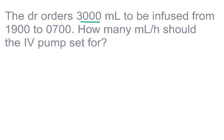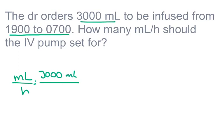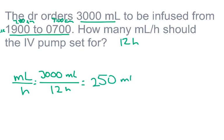Next: the doctor orders 3,000 milliliters to be infused from 1900 to 0700. How many milliliters per hour should the pump be set for? I find something that says milliliter — I have 3,000. For the hours: 1900 is 7 p.m. and 0700 is 7 a.m., so that's running for 12 hours. So 3,000 divided by 12 equals an even 250 milliliters per hour.